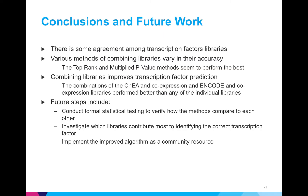We found that there is some agreement among transcription factor libraries, and that libraries can be combined to improve transcription factor prediction. The combinations of the ENCODE and co-expression datasets and the CHEA and co-expression datasets did particularly well — they outperformed every individual dataset, including CHEA. The various methods for combining libraries had varying degrees of accuracy, though the top rank and multiplied p-value methods seemed to perform the best. Future work includes verifying this with formal statistical testing, implementing the new CHEA as a community resource, and investigating which libraries contributed most in their combinations to the correct ranks of the transcription factors.